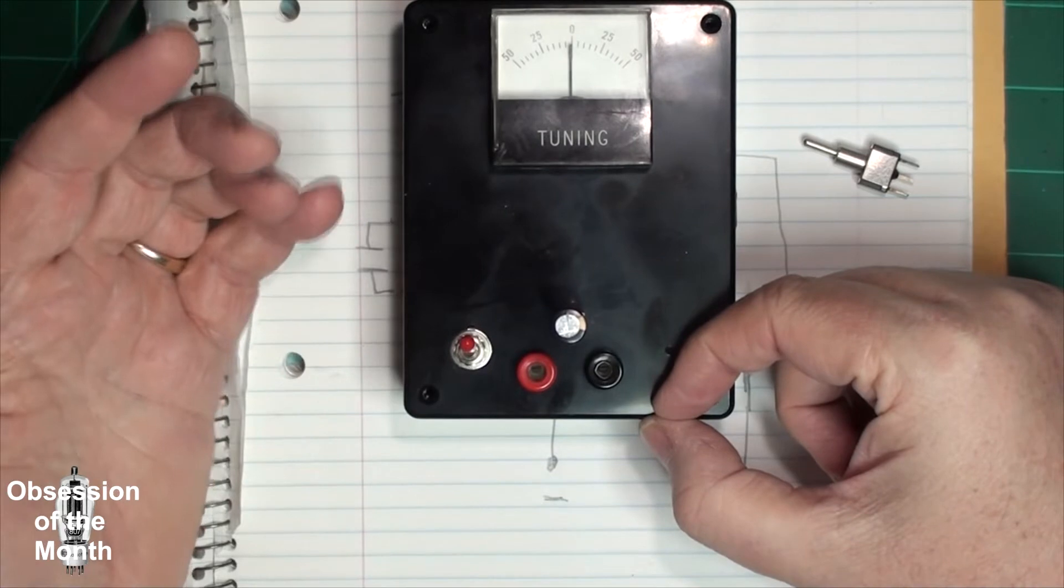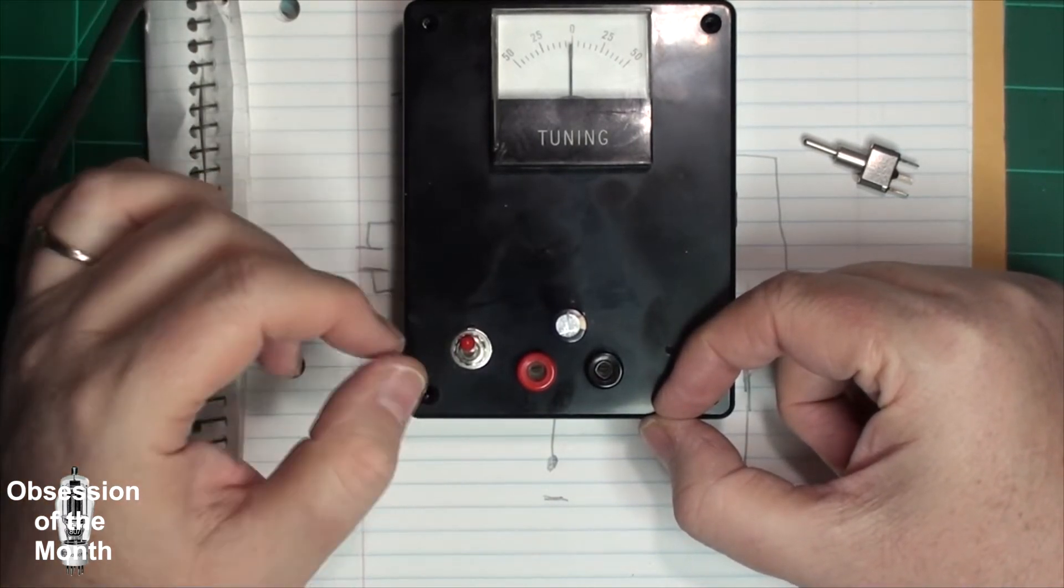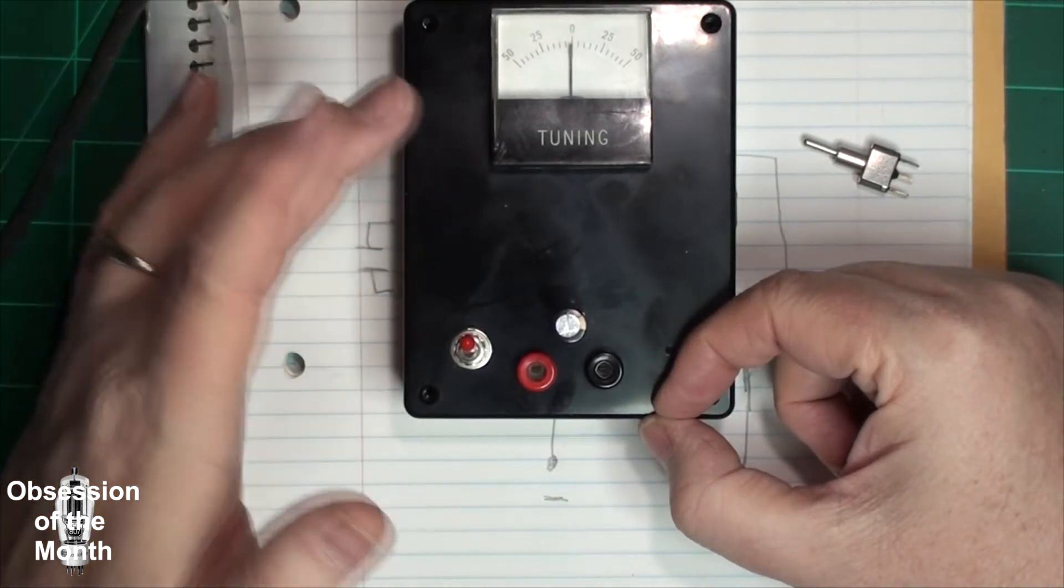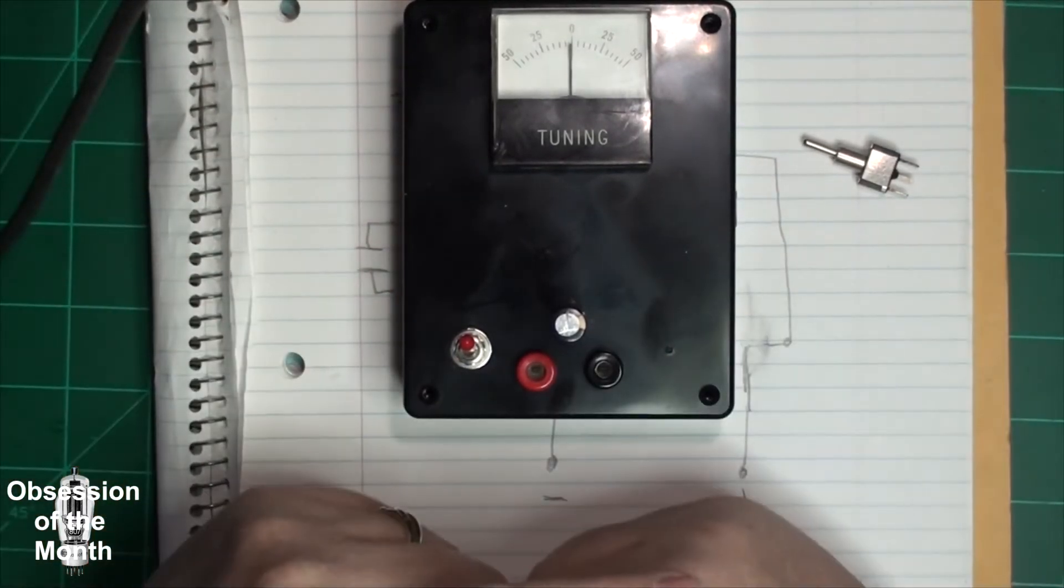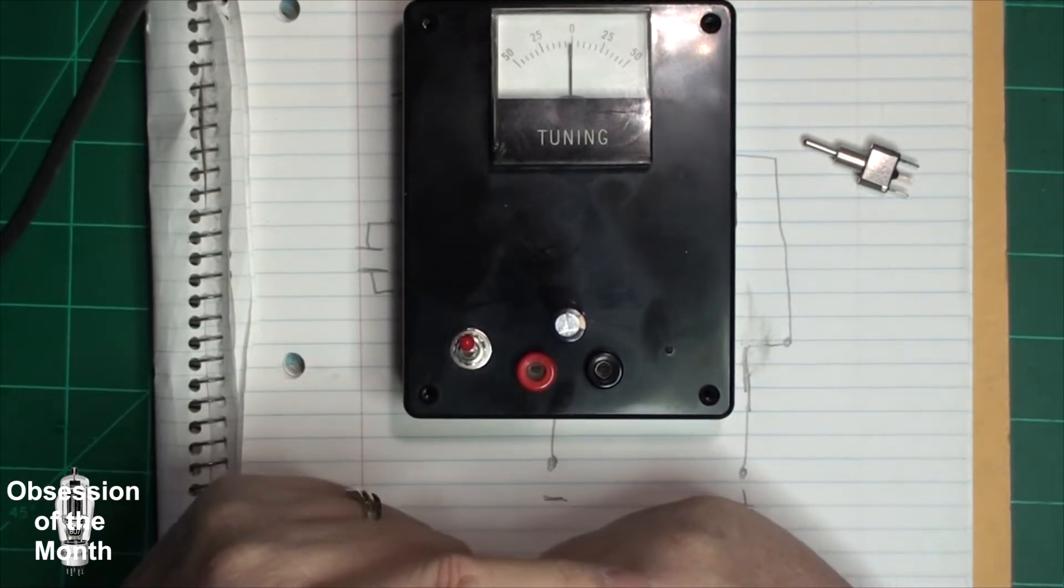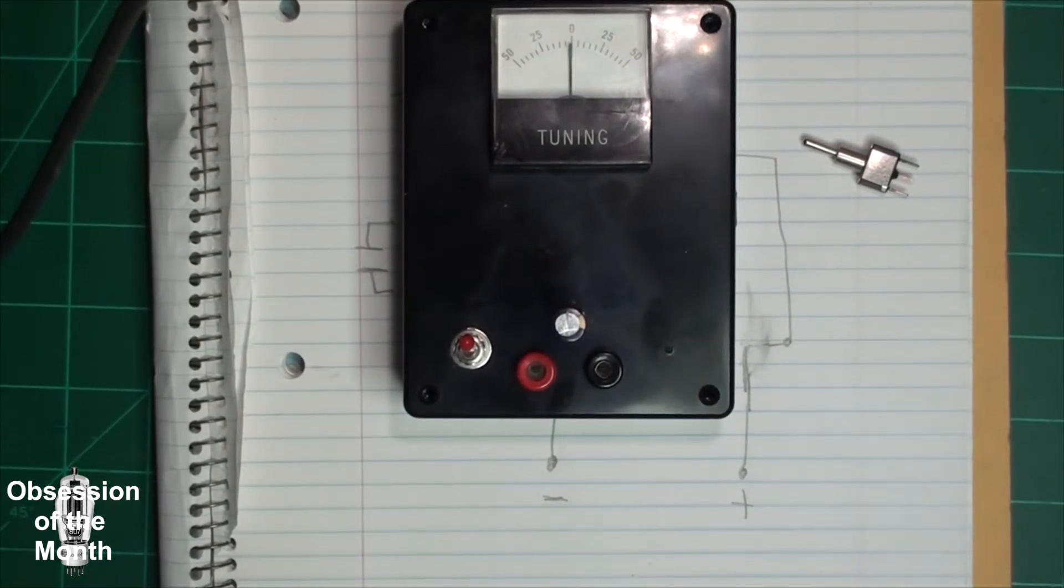And then you can switch it to the 50 microamp setting and observe what the actual leakage is. I had to do some research to find out how to figure out what the leakage should be for capacitors and the information on that is kind of difficult to find.